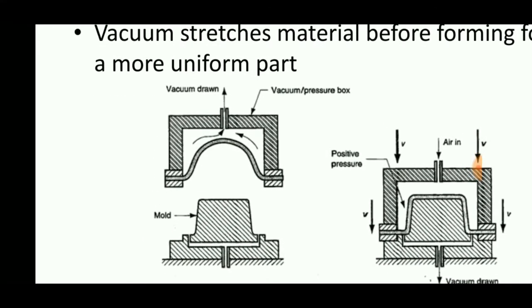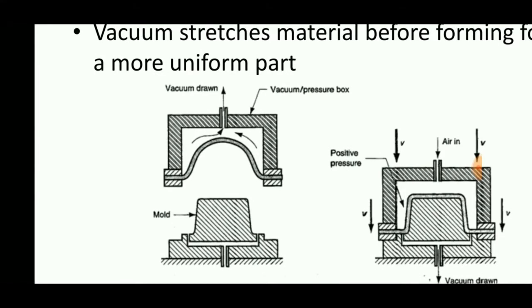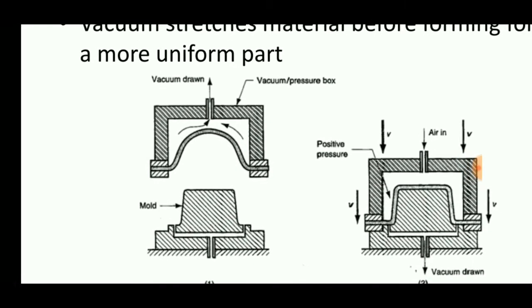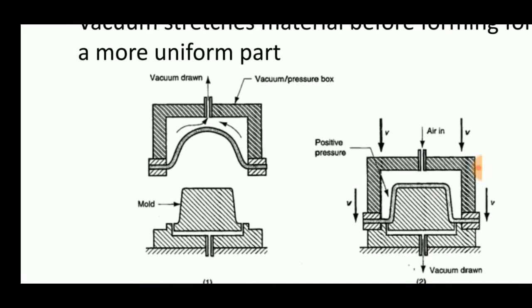This process uses vacuum and air, two modes of force, to shape the sheet metal into a complete part.